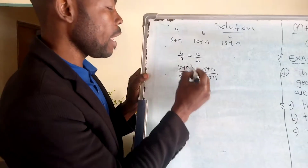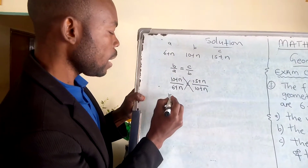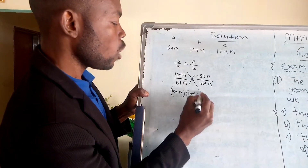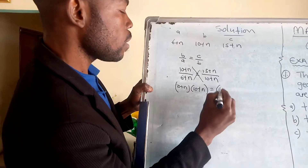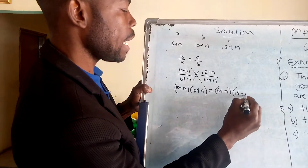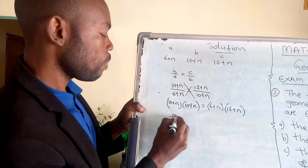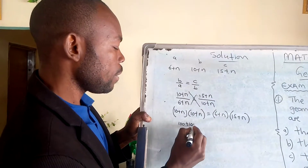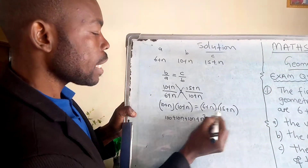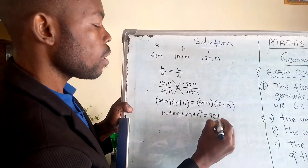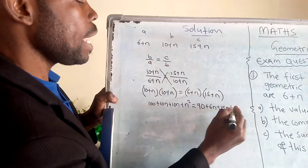So you need to cross multiply now. 10 plus n times 10 plus n equals 6 plus n times 15 plus n. Now start multiplying: 10 times 10 is 100, 10 times n is 10n, n times 10 is positive 10n, n times n is positive n squared. Equals: 6 times 15 is 90, 6 times n is plus 6n, n times 15 is positive 15n, n times n is positive n squared.